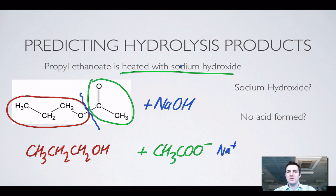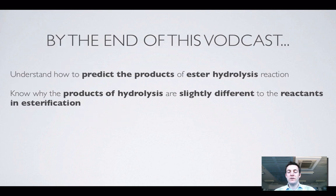Bear in mind we're heating our ester with a base. If we were to make a carboxylic acid product, it would simply react with any base that was around. If I had ethanoic acid and sodium hydroxide, I'd make sodium ethanoate. So be a little bit careful: when you're hydrolyzing esters you won't make the alcohol and the carboxylic acid — you'll make the alcohol and the salt of the carboxylic acid. That's a really quite important difference.